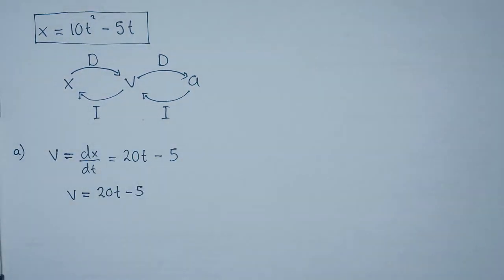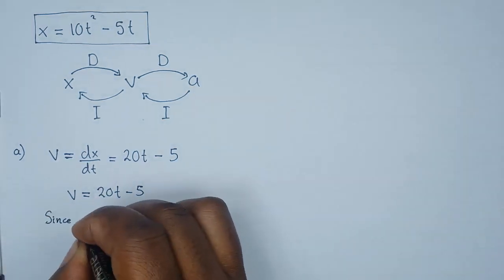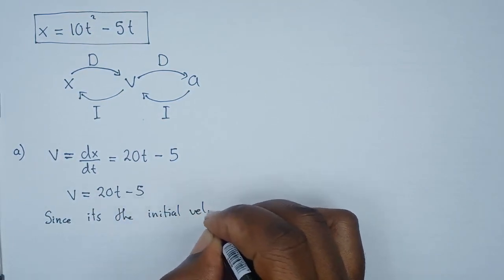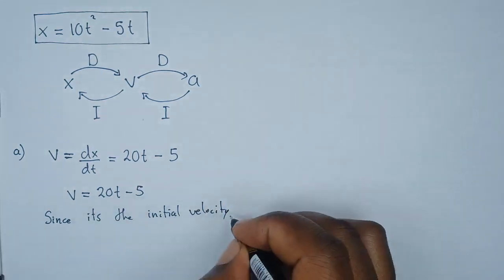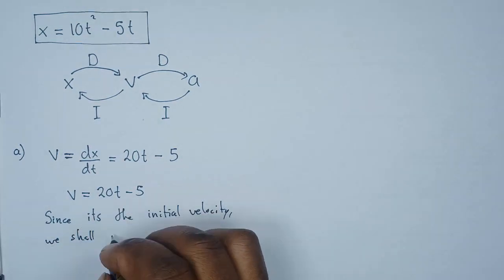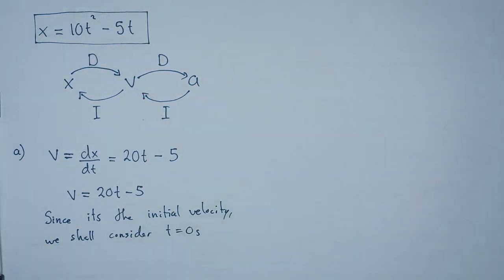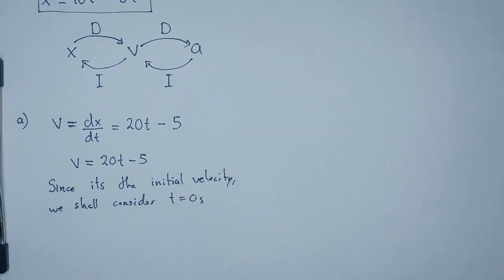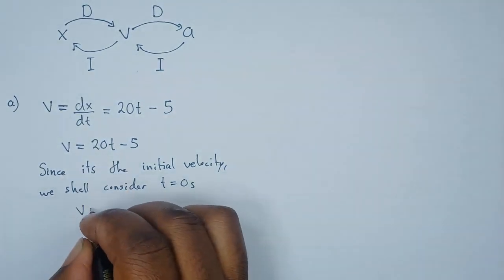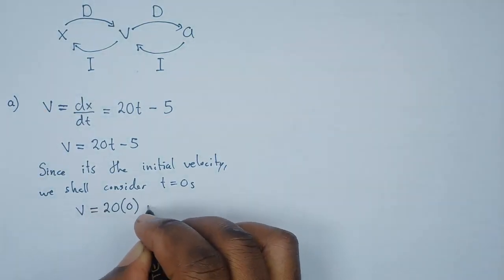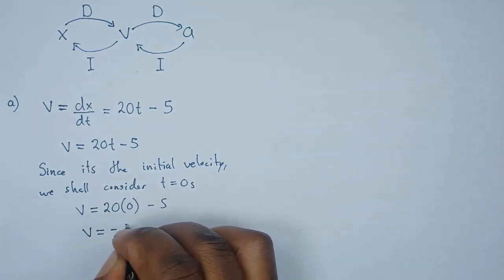An expression for velocity is 20t minus 5. Now, since we're looking for the initial velocity, we consider time t to be equal to 0 seconds — because it's the initial velocity. So where there's t, we substitute with 0: 20 multiplied by 0 minus 5. Hence, velocity equals negative 5 centimeters per second.